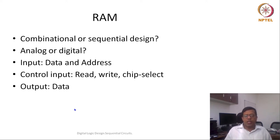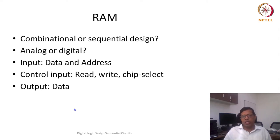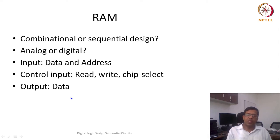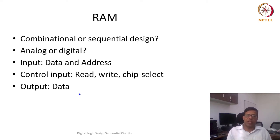The typical inputs to a memory are data and address, plus additional control inputs: read/write — whether we want to perform a read or write operation — and chip select, which indicates whether we actually want to perform read or write. If chip select is 0, we don't perform read or write. If chip select is 1, based on the read/write value we perform either read or write. The output would be data. Data is both input and output — you can write as well as read from the same wires.